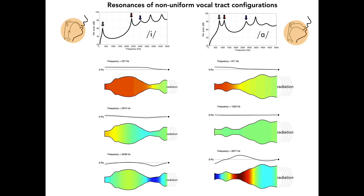As we produce speech or sing, the shape of the vocal tract undergoes almost continuous change in order to shift the frequencies at which standing waves will be supported. This allows for easy passage of those frequency components aligned with a resonance through the vocal tract system and to the outside world. The continual change in the frequency bands that are enhanced or suppressed by this process is the means by which talkers encode a message that is transmitted to a listener.